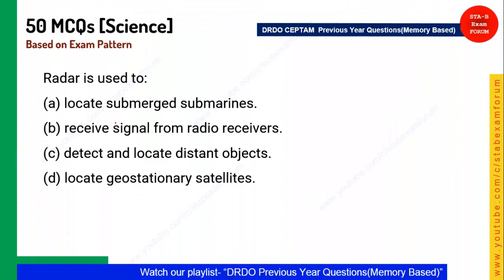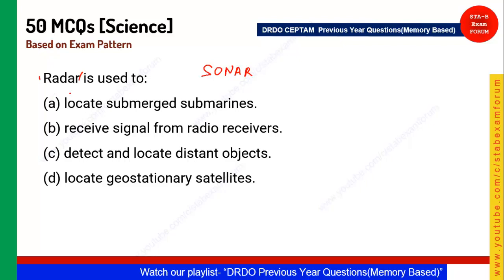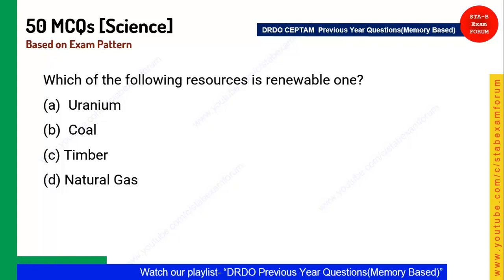Next question: What does RADAR stand for? There are two important terms — radar and sonar. Sonar stands for Sound Navigation and Ranging, and is used to detect and locate submarines. RADAR stands for Radio Detection and Ranging and is used to detect and locate distant objects. Option C is the correct answer.